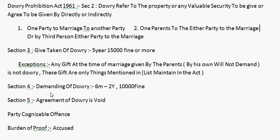Section 4 covers the demanding of dowry — if someone demands dowry, the punishment is 6 months to 2 years. Next, Section 5 states that any agreement of dowry is void. If there was an agreement that 'I will give you this amount as dowry,' that agreement is void. So if the dowry was not given, the other party cannot claim it because the agreement itself is void.